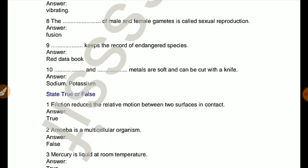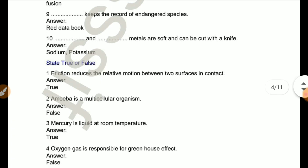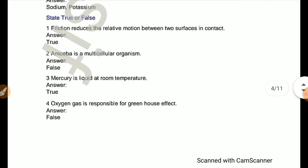Red data book keeps the record of endangered species. Sodium and potassium metals are soft and can be cut with a knife. State true or false.